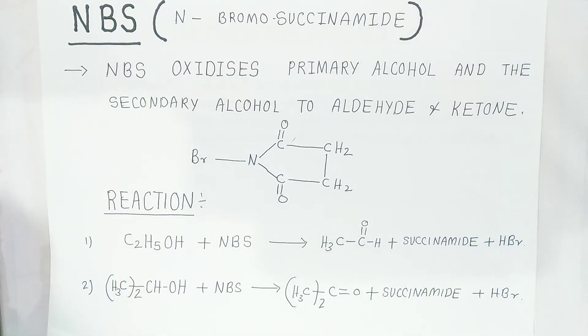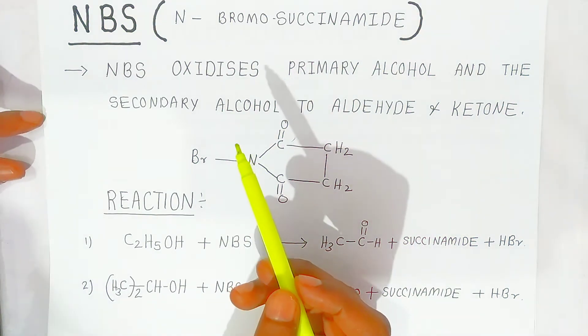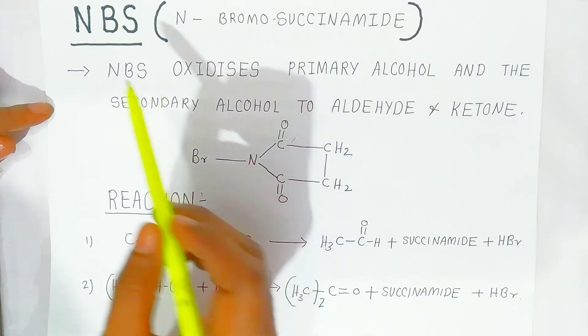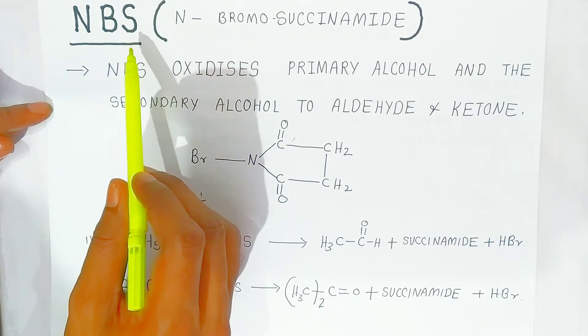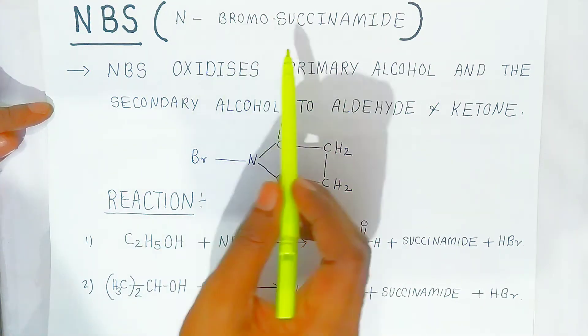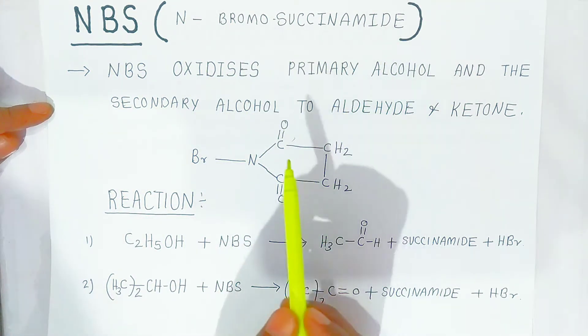Hello students, once again welcome to Bholanata Academy. Today we are going to see the next type of oxidizing agent, that is NBS. The full form of NBS is N-bromosuccinimide.